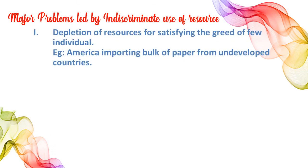The first problem is depletion of resources for satisfying the greed of few individuals. For example, America is importing bulk of paper from underdeveloped countries like India. If resources are depleted, all countries may suffer. Another example is petroleum — developed countries are putting more pressure on fossil fuels, and if they are exhausted, we face a lot of problems.